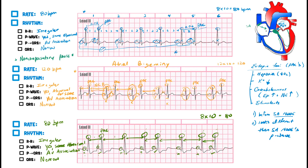Looking at the pattern: here's a PAC — it comes early and its P wave looks different. Then normal R-to-R intervals for two beats — counting them out, they're about the same. Then another PAC, coming early with a goofy-looking P wave. Then two more normal beats, then another PAC. The PACs are occurring every two normal PQRST complexes. This is called atrial trigeminy.